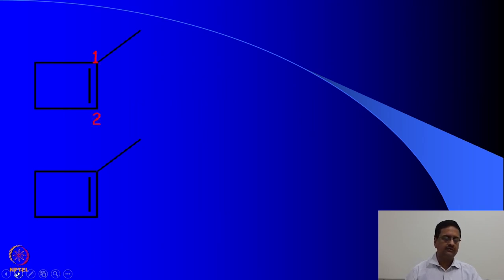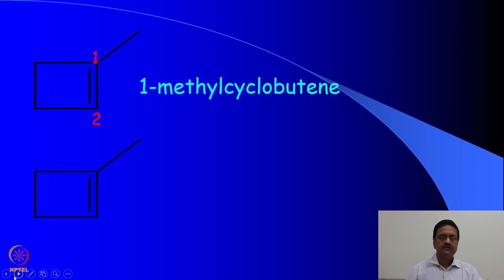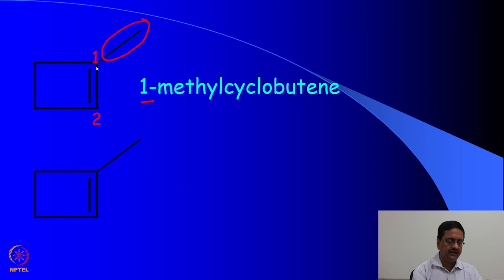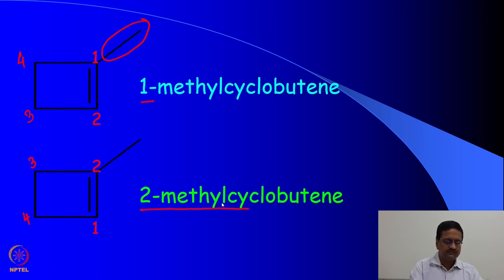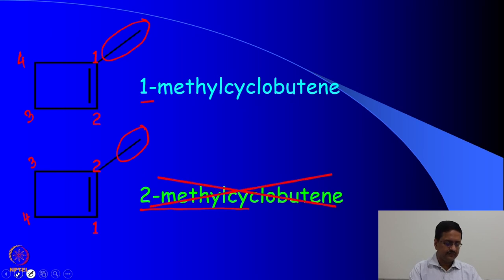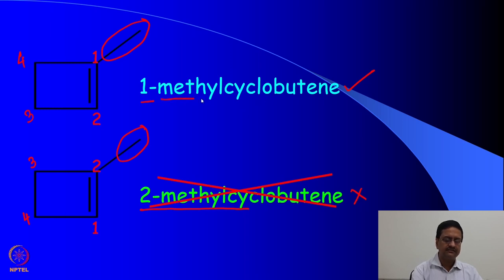There are 2 possibilities of writing the name of a cyclobutane compound. We can name it as 1-methyl cyclobutane when the methyl group is at carbon 1, numbered 1, 2, 3, 4. But if numbered in the opposite direction, the name would be 2-methyl cyclobutane. The correct name is the one where the methyl substitution gets the lowest number, and the cyclobutene double bond is also at position number 1.